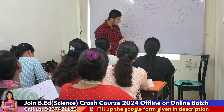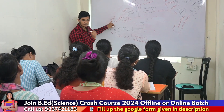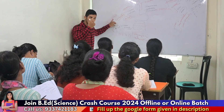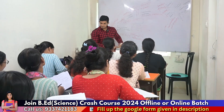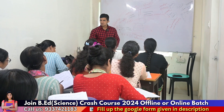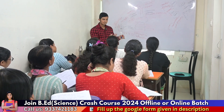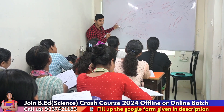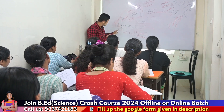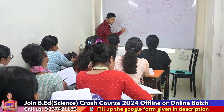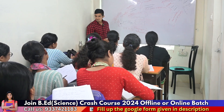LH and FSH are secreted from the pituitary gland, but the gonad is present in the lower abdomen area. So LH and FSH secreted from the pituitary gland will mix with the blood, and the blood will carry them to the different tissues or organs.